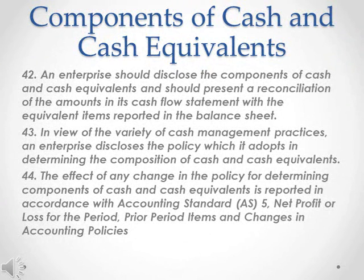Components of cash and cash equivalents. Para 42. An enterprise should disclose the components of cash and cash equivalents and should present a reconciliation of the amounts in its cash flow statement with the equivalent items reported in the balance sheet. Para 43. In view of the variety of cash management practices, an enterprise discloses the policy which it adopts in determining the composition of cash and cash equivalents.